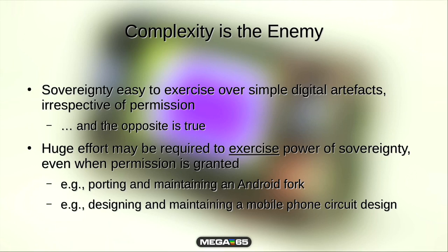The complexity of modern systems really undermines our sovereignty over them. The more complex something is, the harder it is to even know where to start to make any changes. If I wanted to maintain an improved version of Android for my Fairphone, I would probably need about 10 of me working on it near full time to realistically keep up. This is even worse if I wanted to actually control a baseband radio in the phone — I can't even get documentation on that. So if we want to make fully sovereign mobile devices, we need to change the way we're doing things.